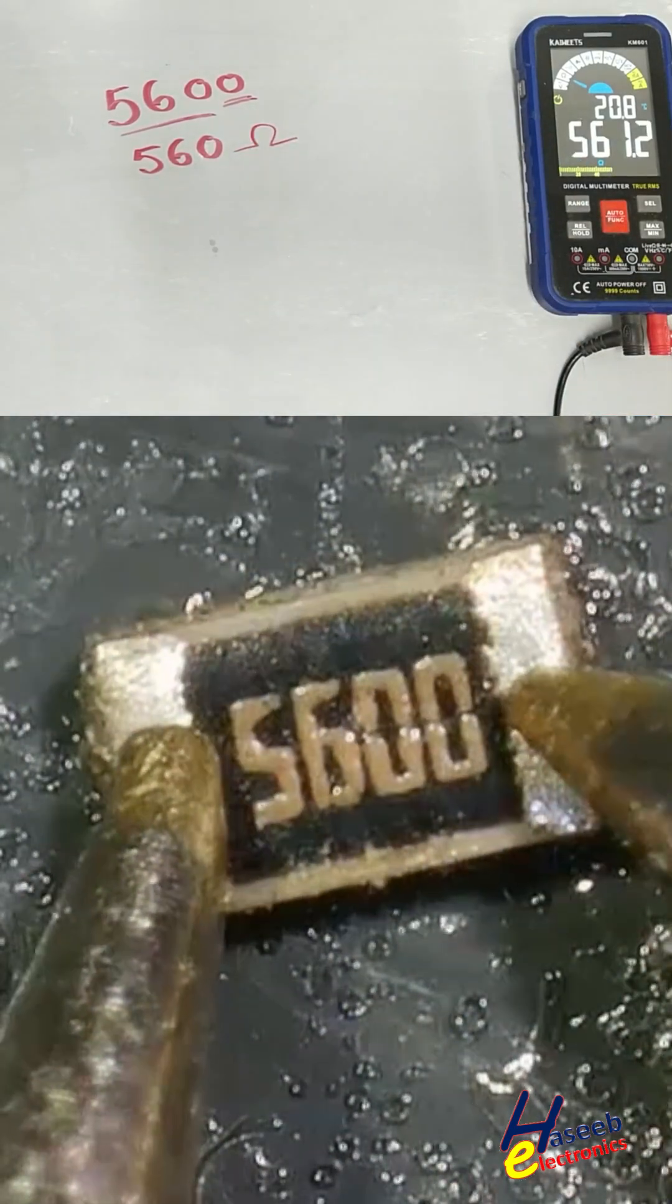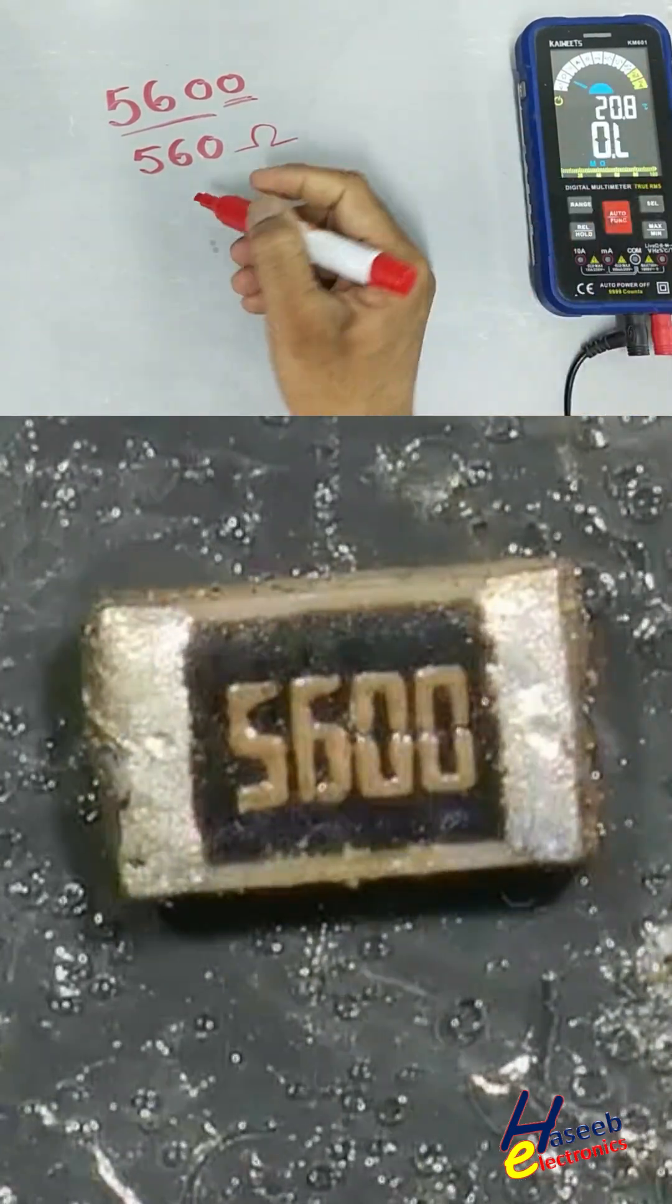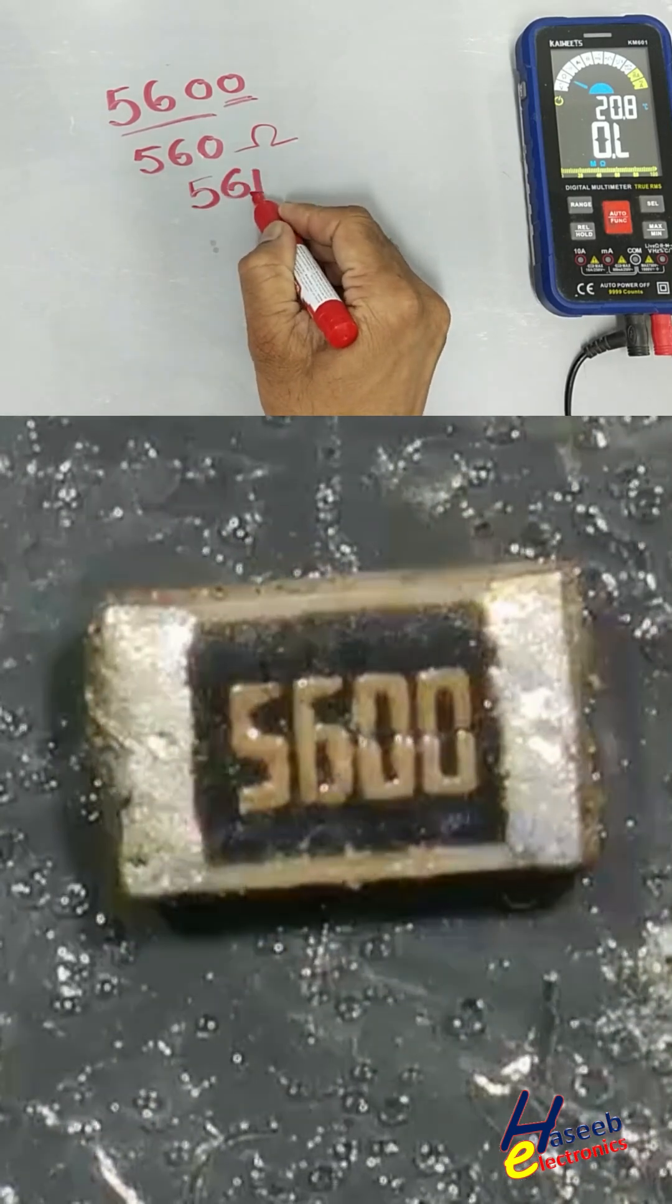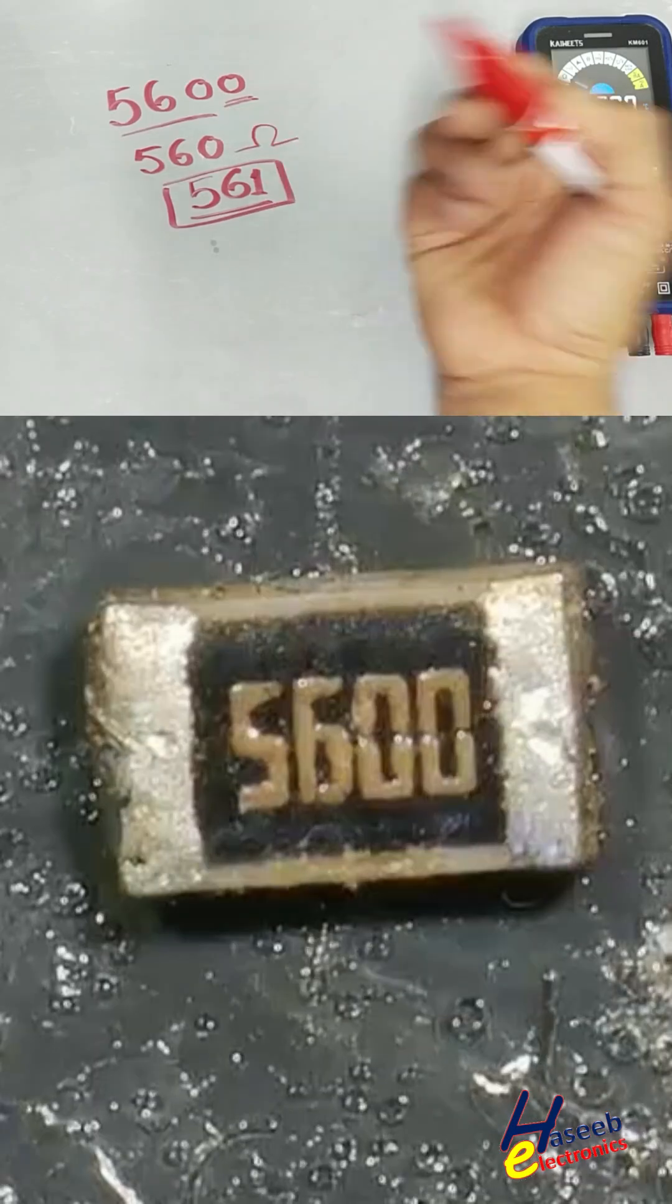561. If you cannot find this 4-band resistor, that time 561, this code will be used to replace this resistor.